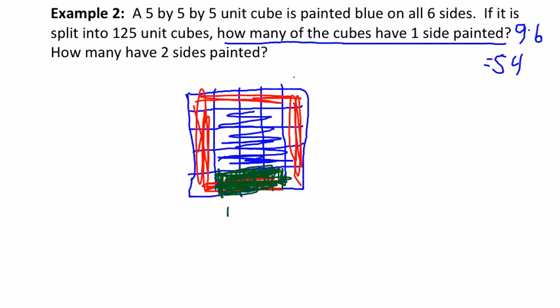And how many do we count? One, two, three. There are three of those. There are 12 edges, so three times 12 is 36. So there are 36 unit cubes that have two edges painted.